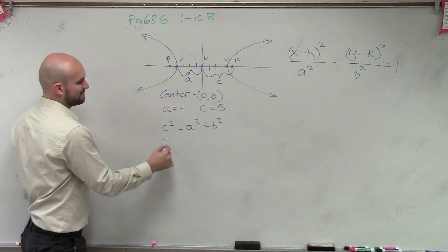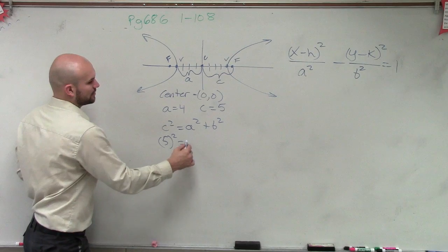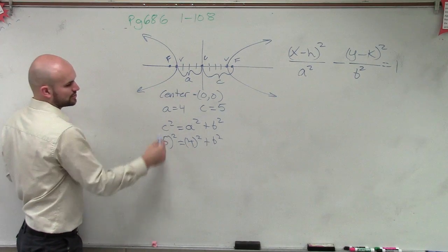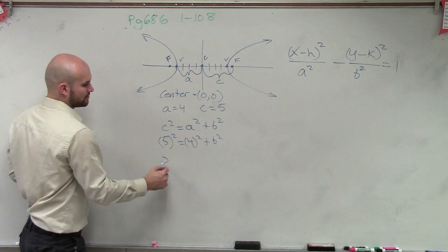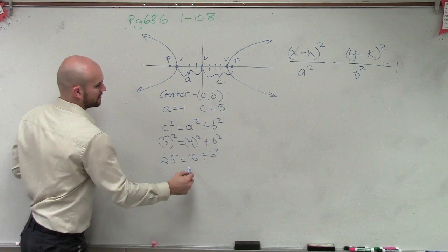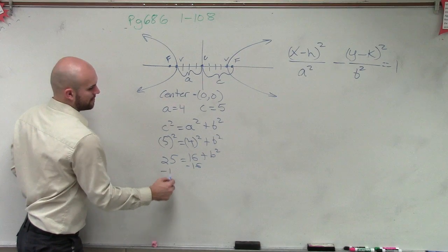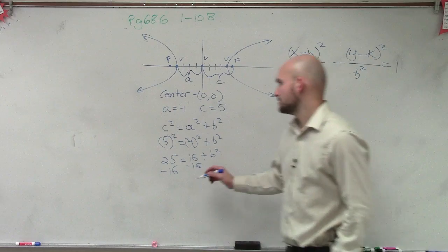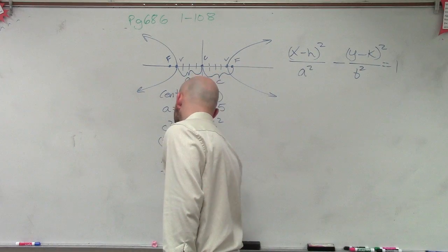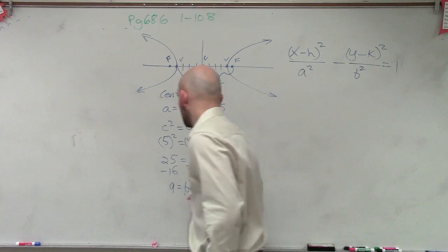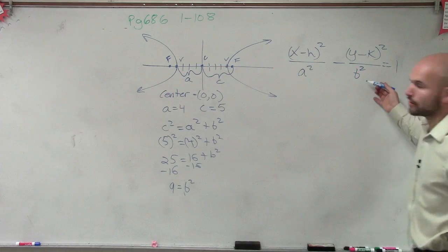So c squared is going to be 5 squared equals 4 squared plus b squared. Well, 5 squared is going to be 25 equals 16 plus b squared minus 16 minus 16. So therefore, 9 equals b squared. We don't need the square root.